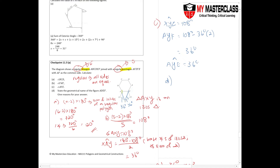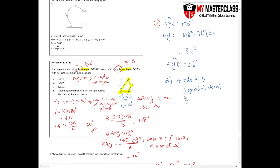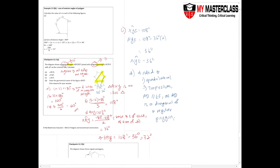Part d asks for the geometrical name of shape ADEF. Drawing the line, we see a four-sided figure — a quadrilateral. Since AD is a diagonal of the regular polygon, AD is parallel to EF. Therefore the correct answer is a trapezium. The reason given is that AD is parallel to EF, as AD is a diagonal of the regular hexagon.